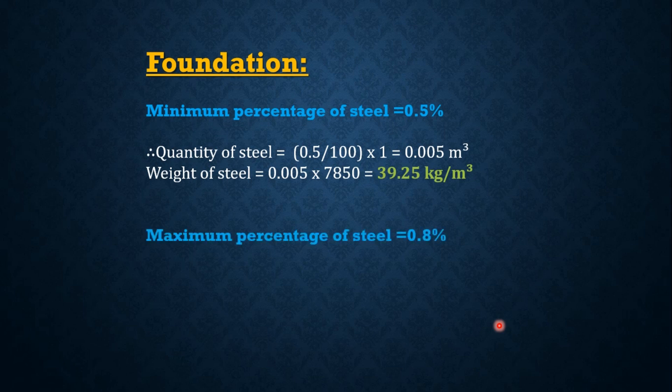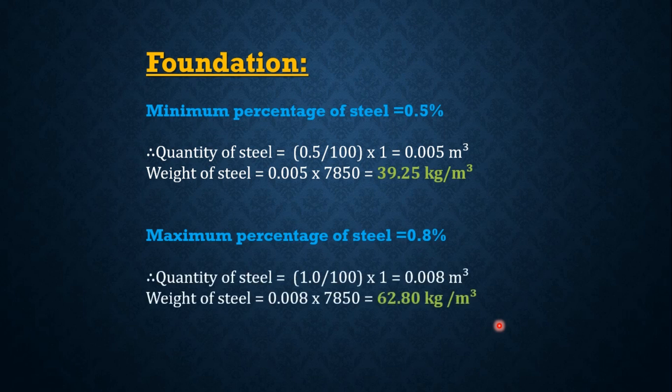Similarly, the maximum percentage of steel required in a foundation is 0.8%. Therefore, the quantity of steel equals 0.008 meter cube and the weight of the steel equals 62.80 kg per meter cube.